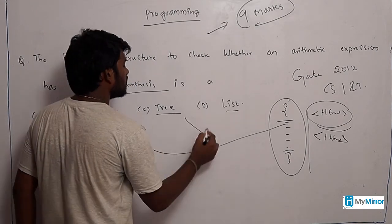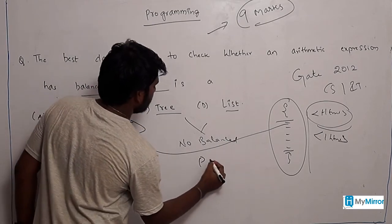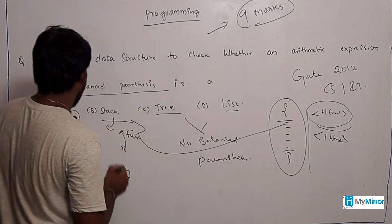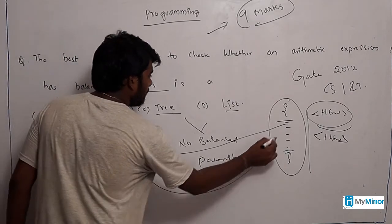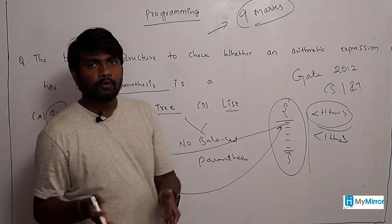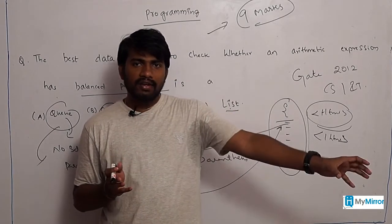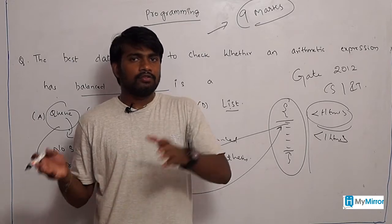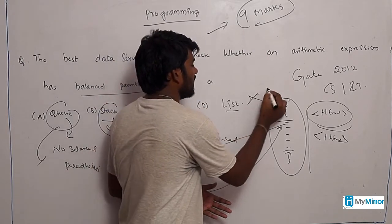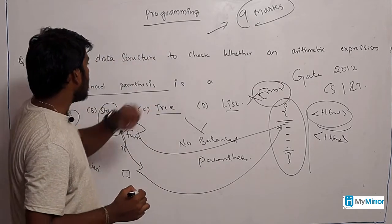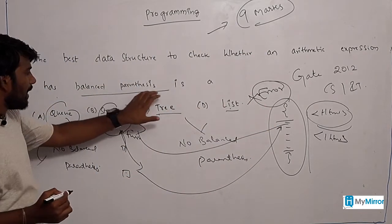In a tree as well as a list, there is no balanced parenthesis. So out of queue, stack, tree, and list, it is the stack which maintains balanced parenthesis. Whatever data you enter, it is closed in a particular statement. If you do not close your parenthesis or do not retrieve your data exactly, you will get a syntax error. So the exact answer is: the best data structure to check whether an arithmetic expression has balanced parenthesis is stack.